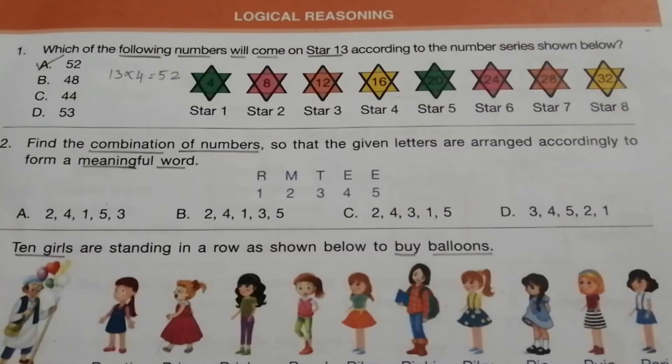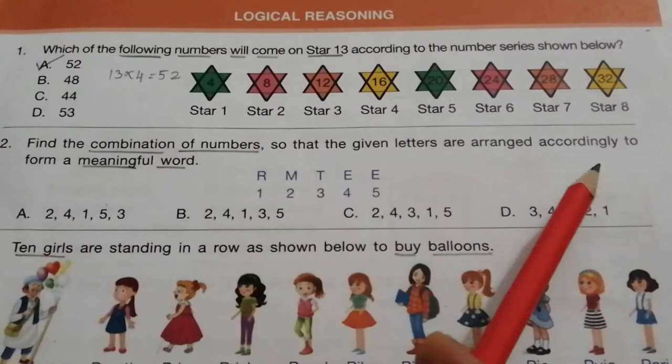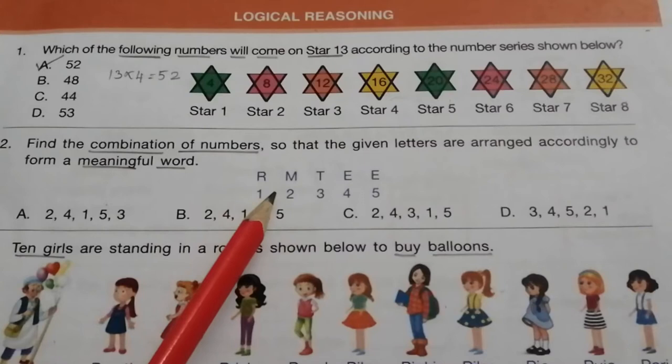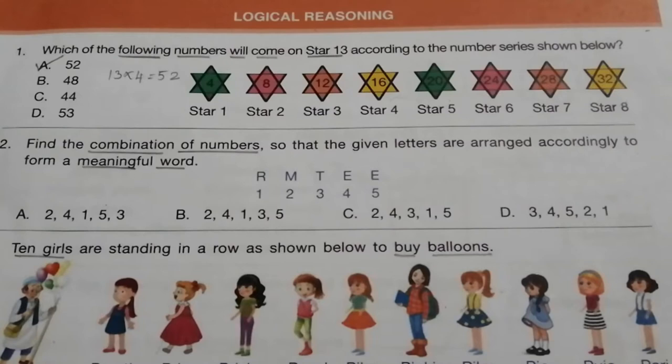Question 2: Find the combination of numbers so that the given letters are arranged accordingly to form a meaningful word. These are the given letters, and from the options we can easily find the answer. The answer is C.